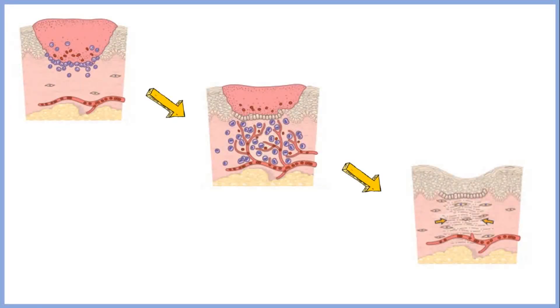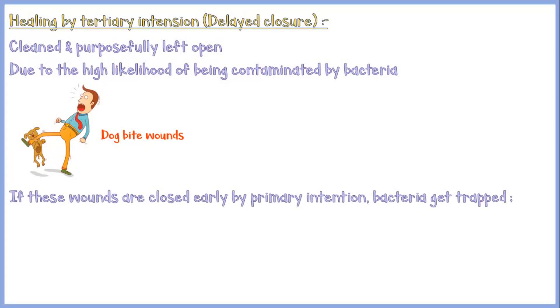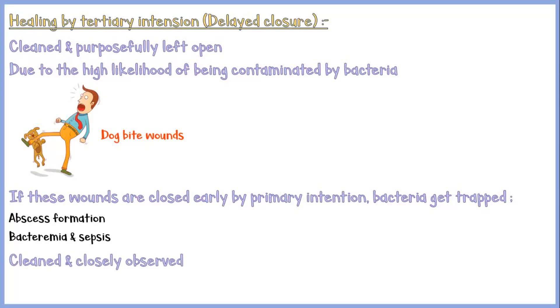In healing by tertiary intention, or delayed closure, the wound is cleaned and purposefully left open due to the high likelihood of being contaminated by bacteria, such as dog bite wounds. If these wounds are closed early by primary intention, it may trap bacteria inside and may lead to abscess formation, or even bacteremia and sepsis. Therefore, these wounds are regularly cleaned and closely observed for infection before being closed by primary intention.